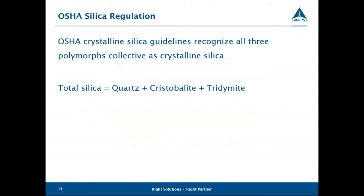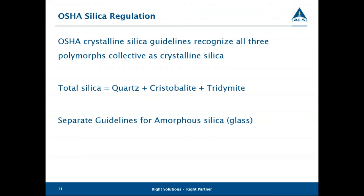When OSHA looks at silica, they consider all three polymorphs. So when you're submitting samples to a laboratory and ask for silica, by default we're going to run for all three forms — quartz, cristobalite, and tridymite — unless specified otherwise. Occasionally you might run into amorphous silica, which is basically glass. Under crystalline methodologies it would be invisible; it must be heated under a platinum catalyst and converted to the crystalline form for indirect analysis. The current OSHA crystalline silica regulations do not apply to amorphous silica, which has its own higher permissible exposure limits.